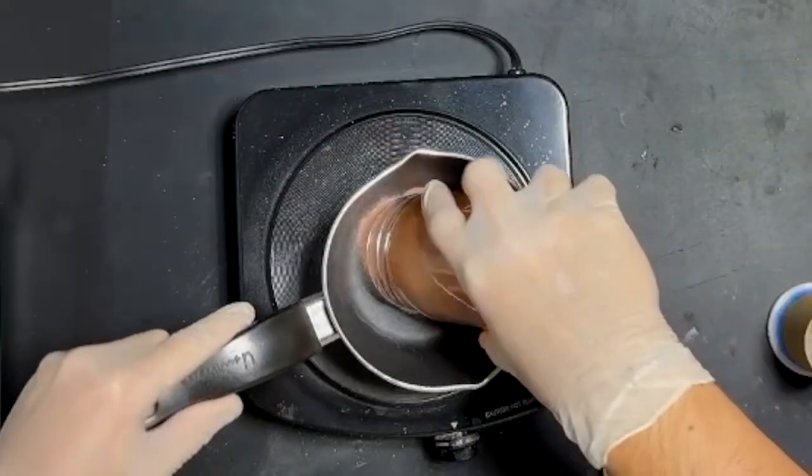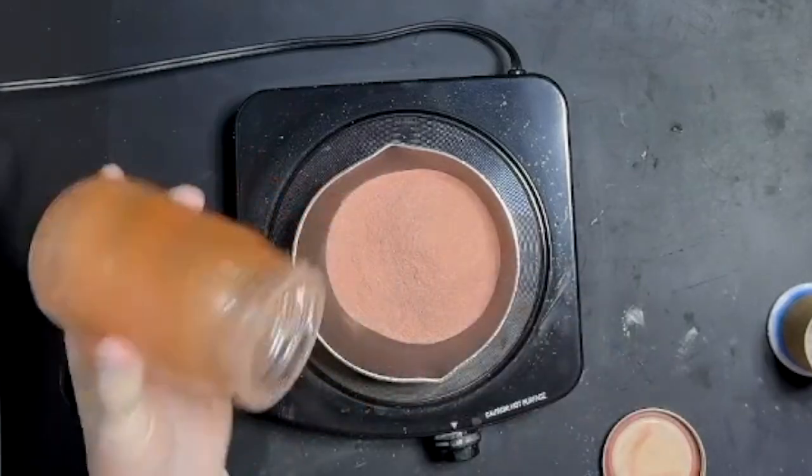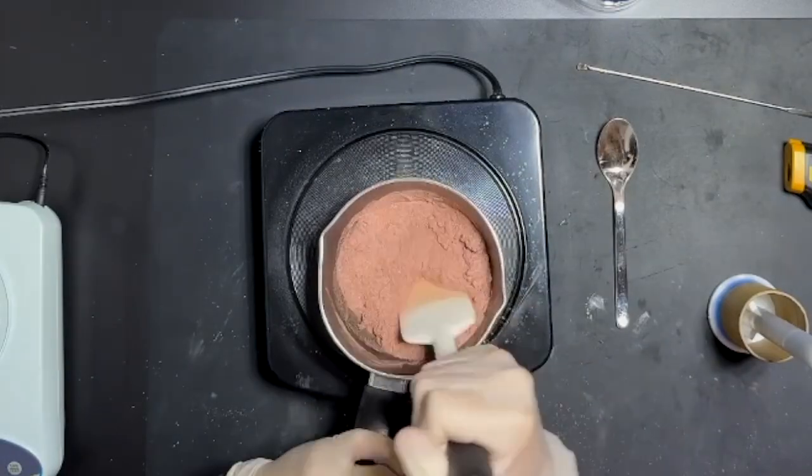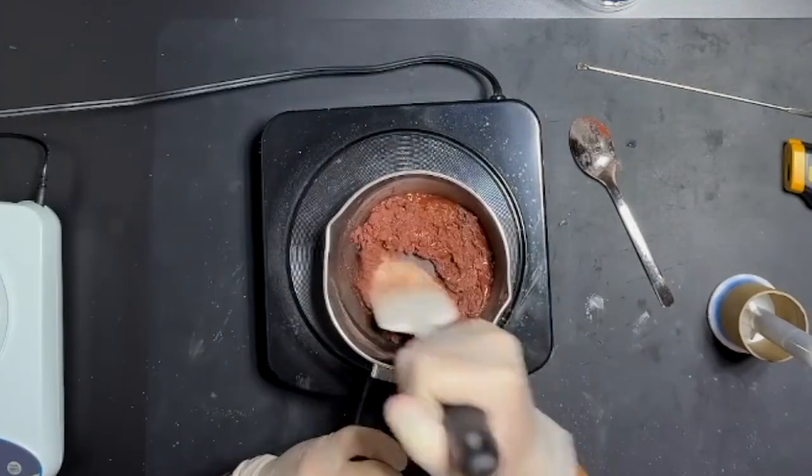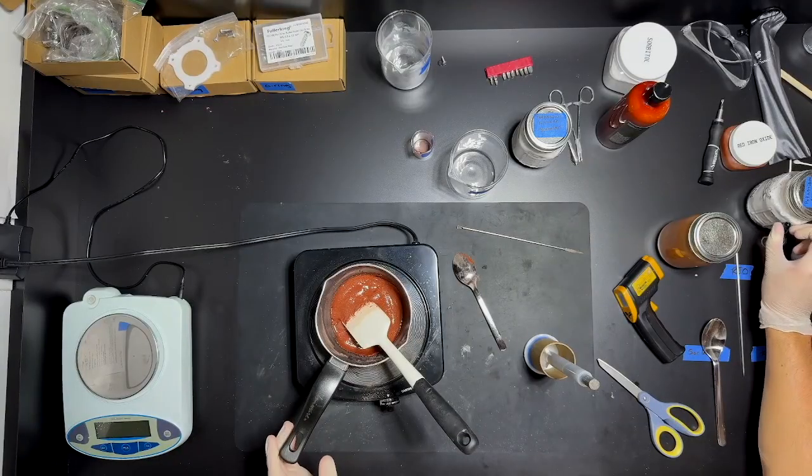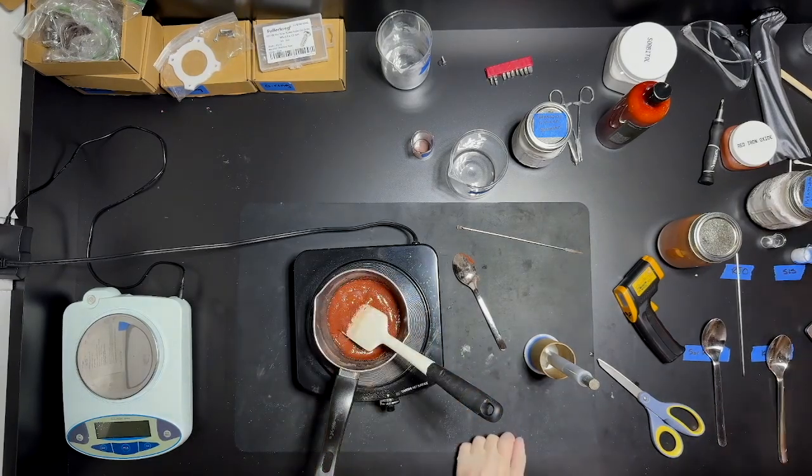Now I pour the propellant into a pot. I have the skillet on medium and I just stir this for around 10 minutes, making sure it does not exceed 250 degrees. Once it's a liquid, I will add the SLS and mix it thoroughly to fully incorporate it.